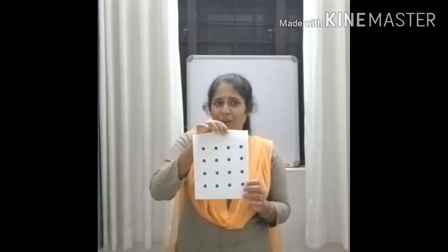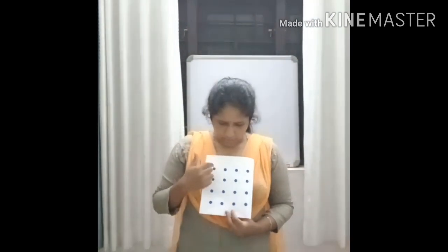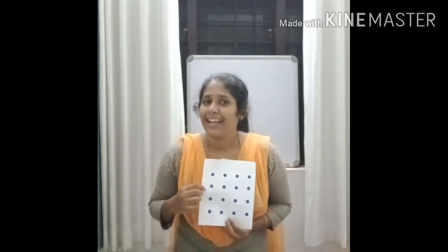Then how many dots should be reduced to get a square shape here? These two columns should be reduced to get a square shape. Now look at these dots: one, two, three, four — and one, two, three, four. So rows and columns are equal. How many dots are there now? Sixteen, right? Four into four — sixteen.